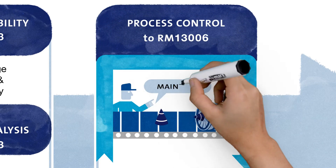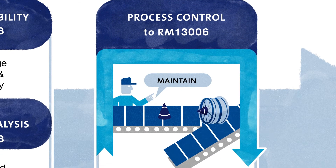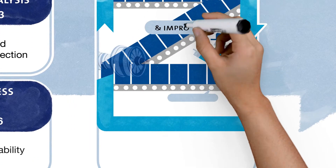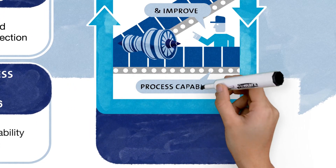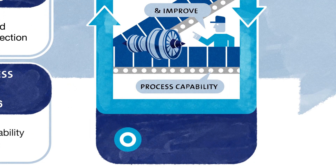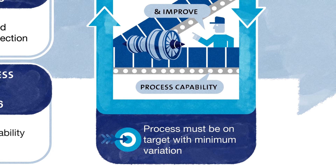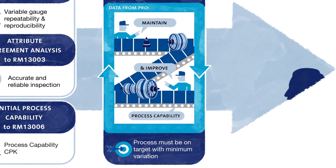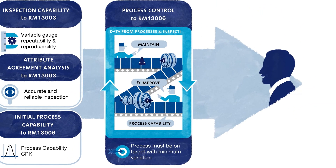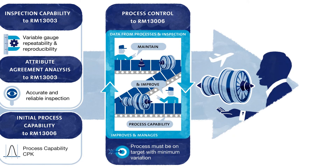Once in production, the role of manufacturing and assembly is not just to maintain the initial capability level, but to continually improve it to ensure customer and business targets are met. Moreover, data from our processes and inspection must be used to control the process by allowing us to take action before defects are made.